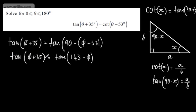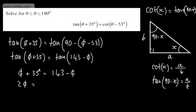At this stage, if we have tan of this argument equal to tan of this argument, we can set the arguments equal, find a principal value, and then consider subsequent solutions. We know the tan curve cycles every 180 degrees, so we find one solution and then add on multiples of 180. So we have theta plus 35 equals 143 minus theta, giving 2 theta equals 108, plus n multiples of 180 degrees.